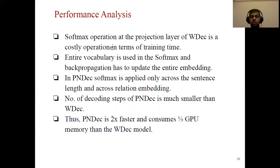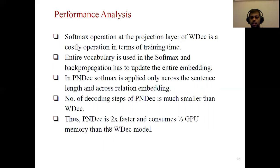The pointer network-based model is also much faster and consumes fewer resources. Word-level decoding has a costly softmax operation where the decoder LSTM hidden vector is mapped to the entire vocabulary — which can be as large as 40,000 words — requiring backpropagation to update all embeddings. For pointer network-based decoding, softmax is only applied over the source sentence length (around 50-100 tokens) and across the relation set (around 24-30 relations). Furthermore, to generate an entire tuple, word-level decoding must generate all tokens and separator tokens step by step, while the pointer network produces four pointer probability distributions in a single step.